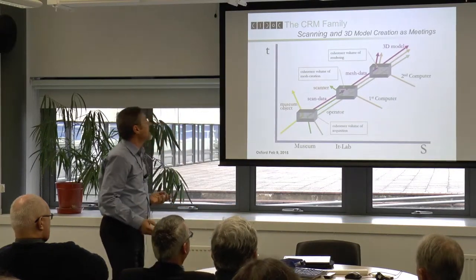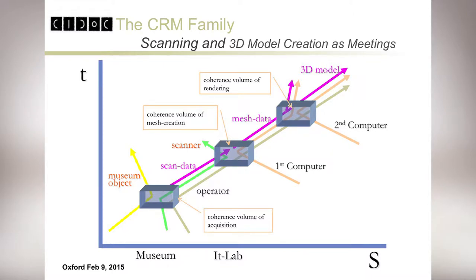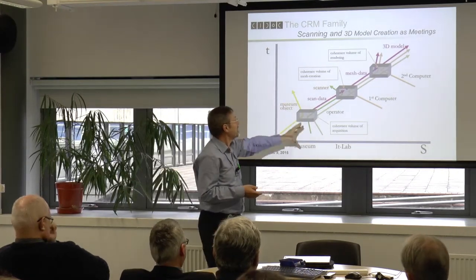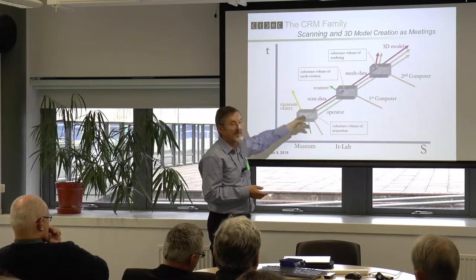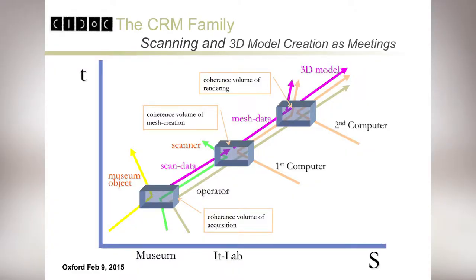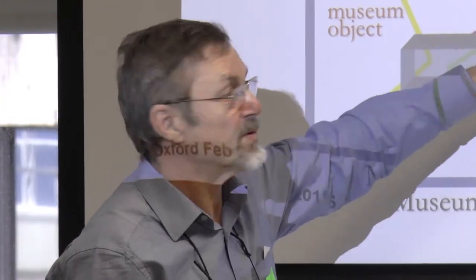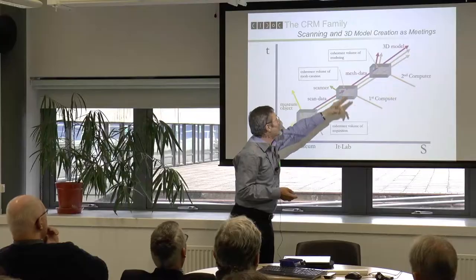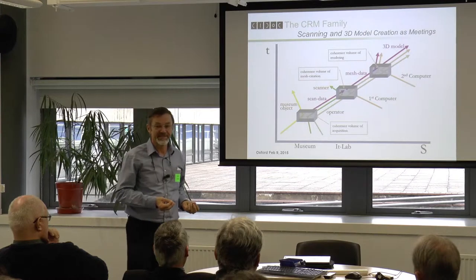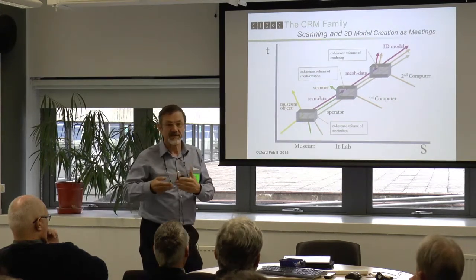We can describe the scanning of a building or a museum object with a laser scan or photogrammetry as a meeting of an instrument and an operator with the object — just as we have meetings with people. The operator has the machine and the machine has the data in it, carries over the knowledge, then goes to a computer, does computing, creates a mesh and a 3D model. It's transferred in one meeting from one machine to another — the same as meeting here and then going somewhere to write it down.